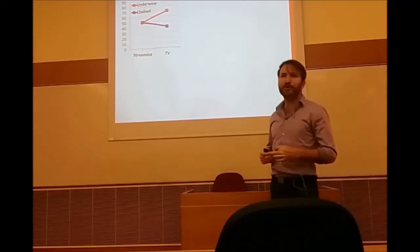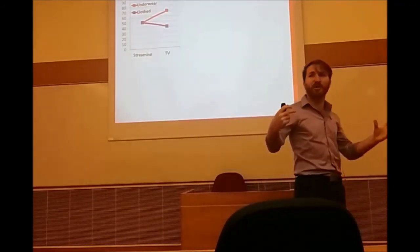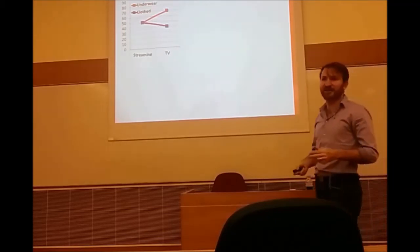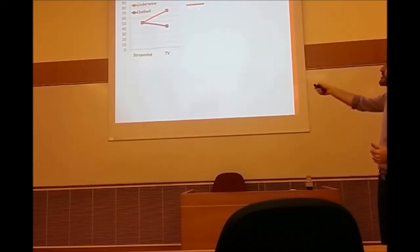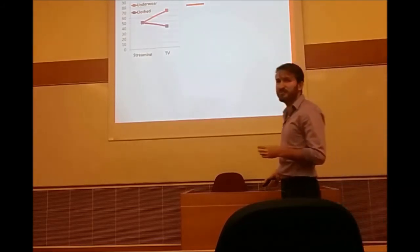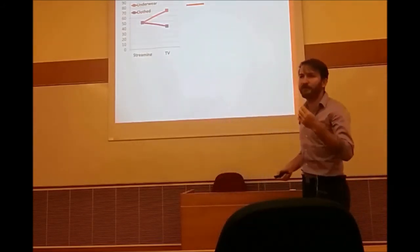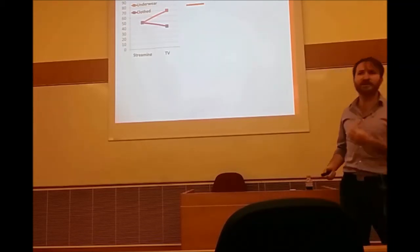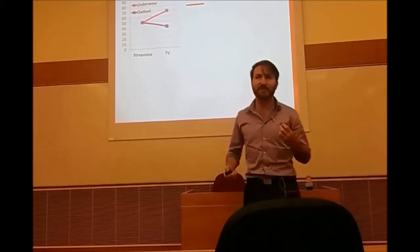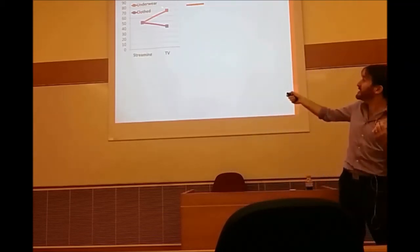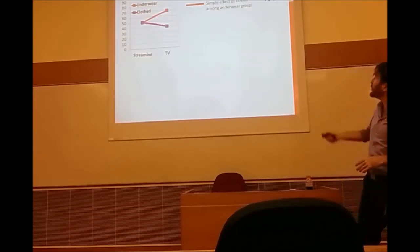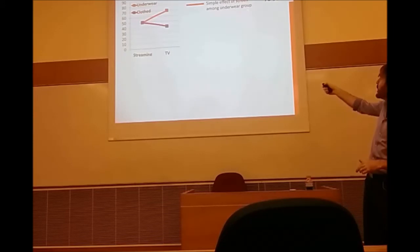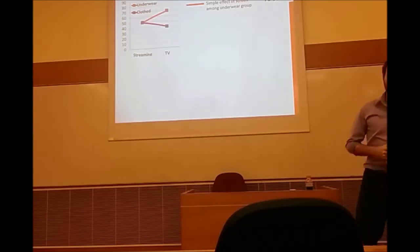Let's look at two more examples. First — can we see an interaction here? Yes, the lines are not parallel. The red line (underwear group): is there a simple effect of screen type? Yes — the line is not horizontal. Simple effect of screen among underwear: 70 minus 50 is plus 20. Purple line (clothed group): is there a simple effect? Yes — the line is not horizontal either.